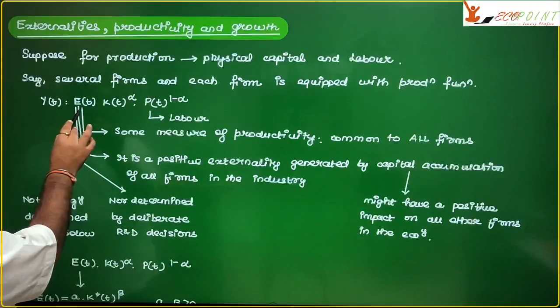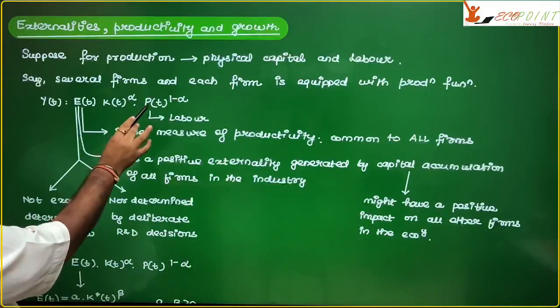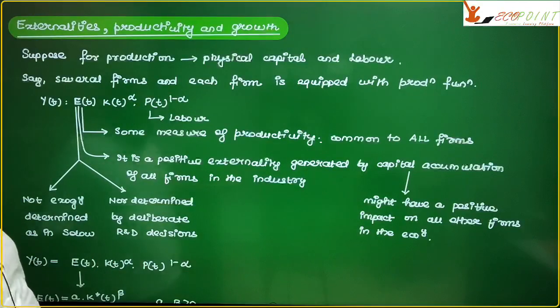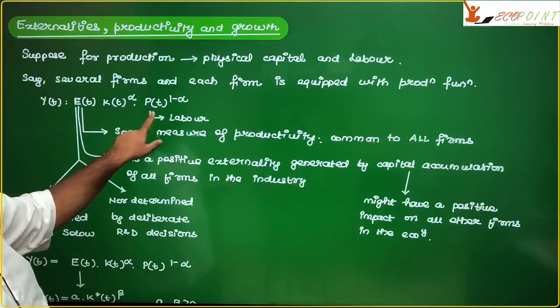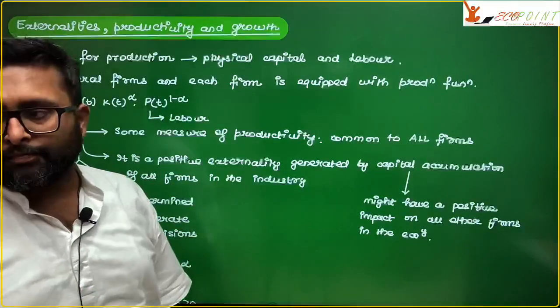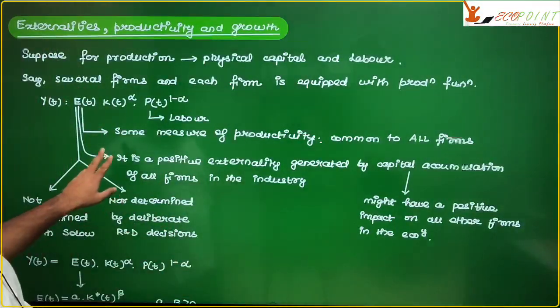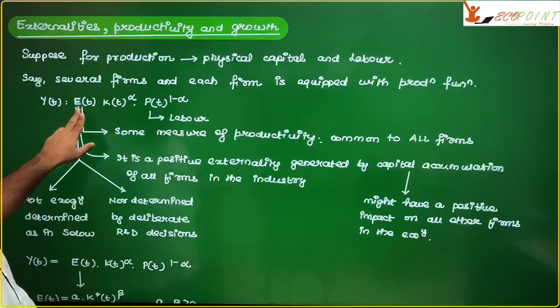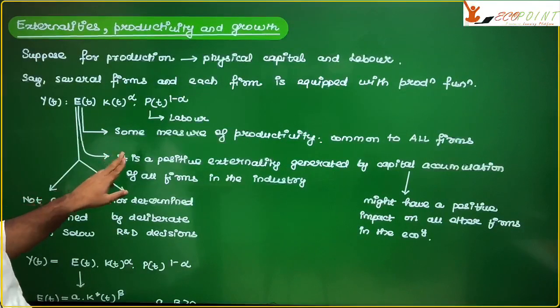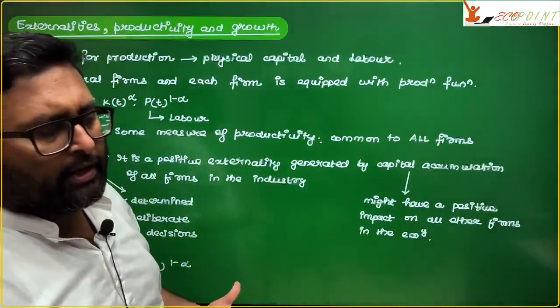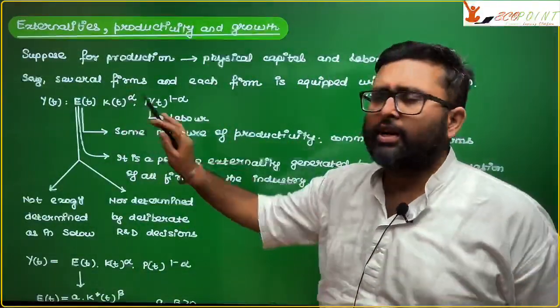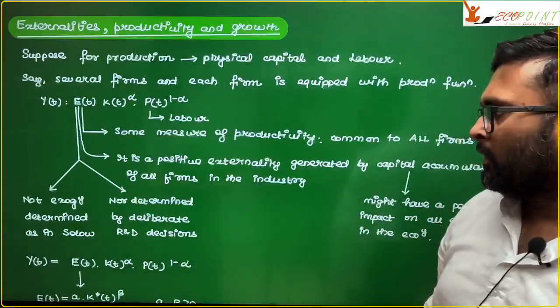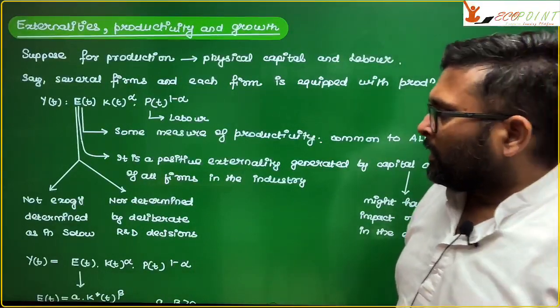Like this, y_t equals e_t, k_t to the power alpha, p_t to the power 1 minus alpha. Now, this p_t is nothing but labor. And this e_t is some measure of productivity, which is going to be common to all the firms. All the firms have the same level of productivity.